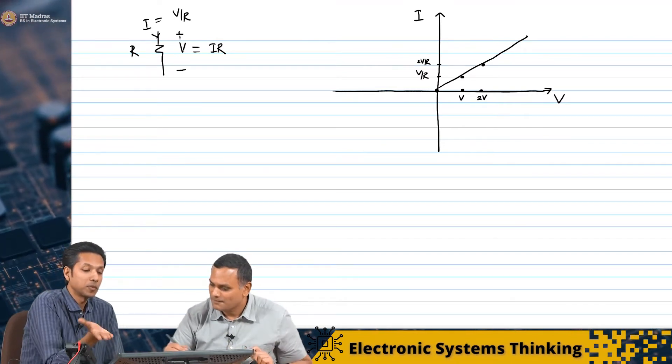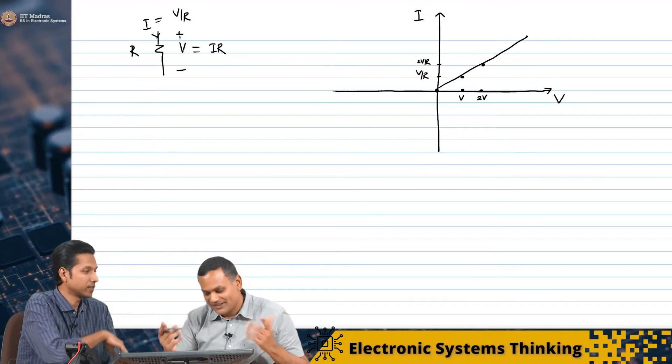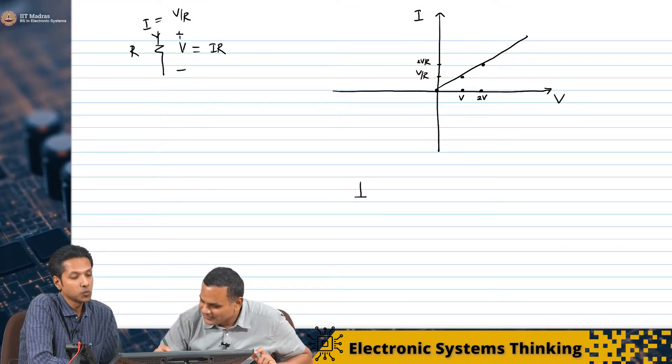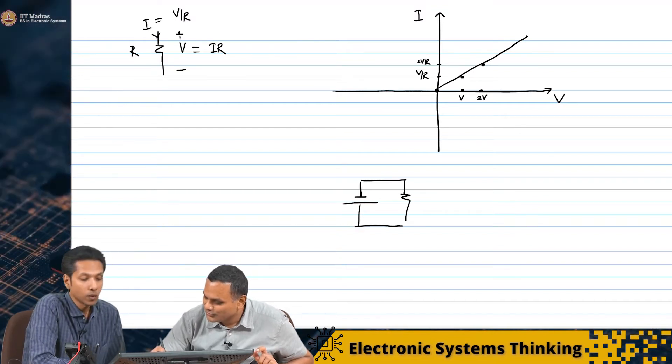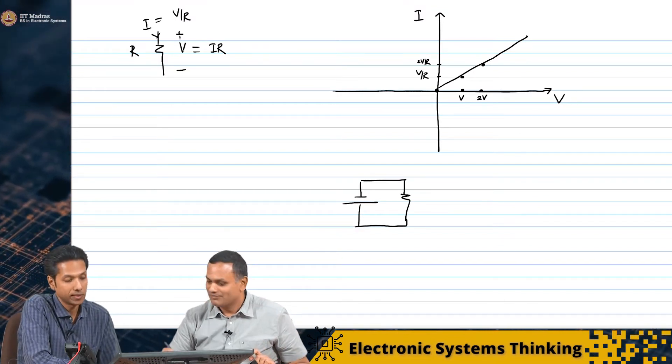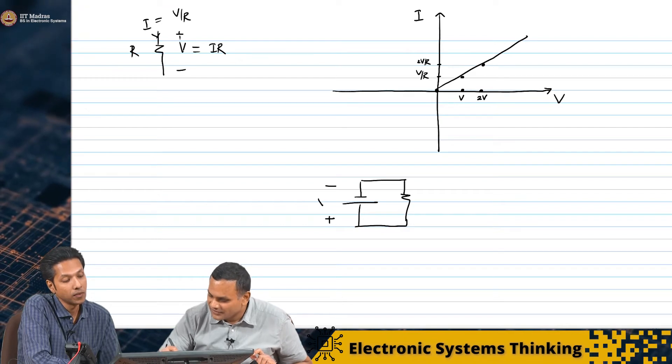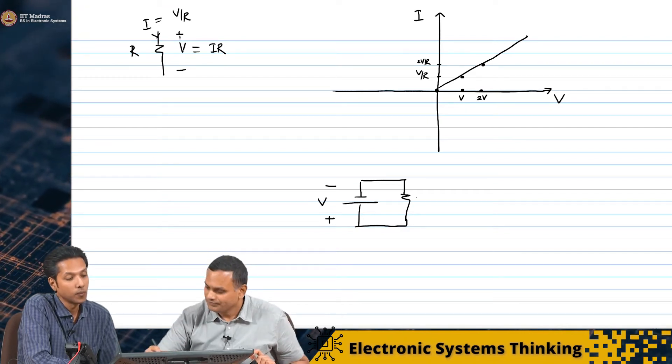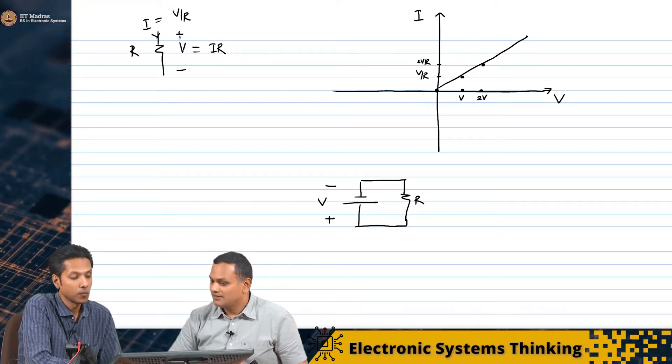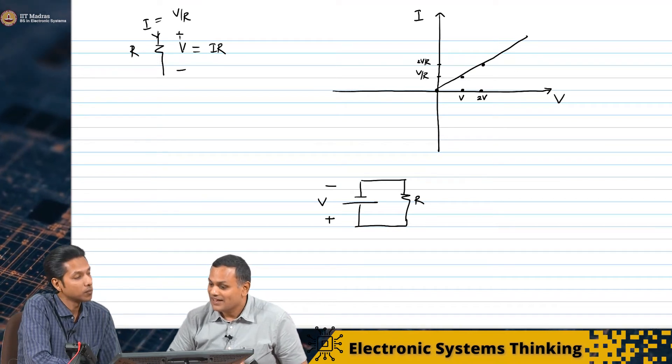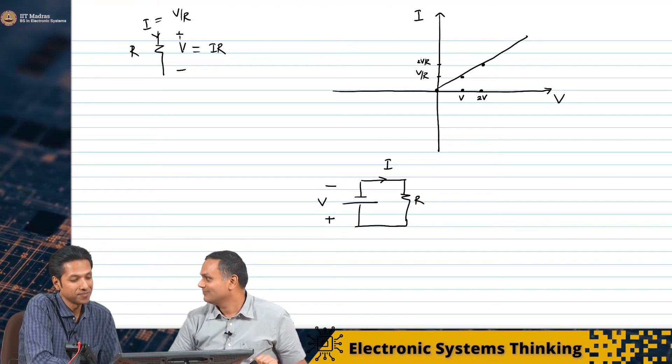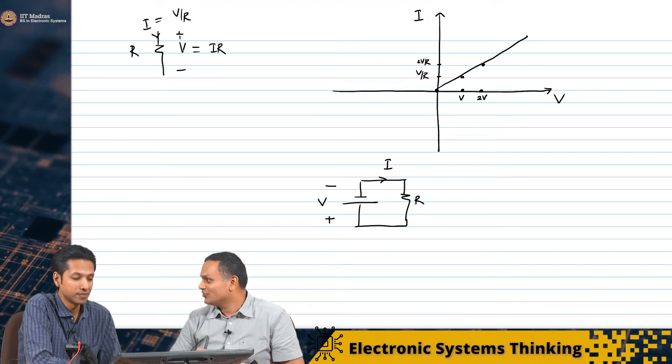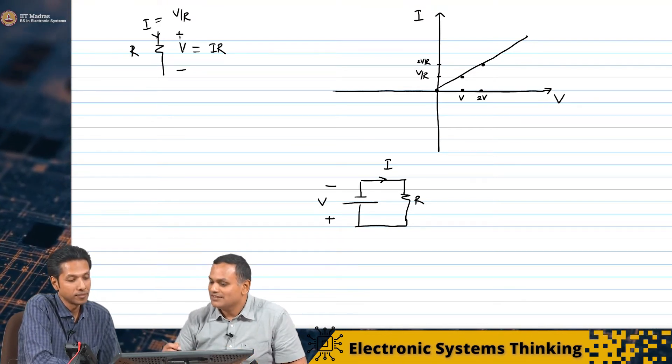If I flip the voltage in the other direction - flipping voltage we draw it like this. I think it's important to also draw the other way. Now, the potential difference is in this fashion, but I am looking at the current in the same direction. I have only flipped the voltage.